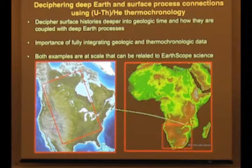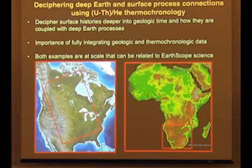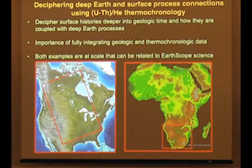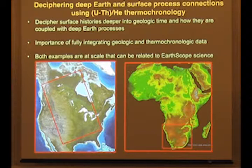I'm going to give two particular examples and highlight a couple key points. First, how we're using apatite helium thermochronology and recent advances to decipher surface histories deeper into geologic time and connect them with deeper Earth processes. The second key point I want to emphasize is the importance of fully integrating your geological constraints with the thermochronometric information you obtain — because by fully coupling these things, we can obtain detailed information about surface history evolution. Both examples I chose are at a scale that can be related to a lot of the EarthScope datasets.